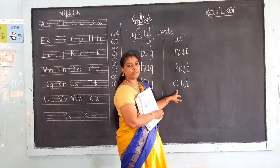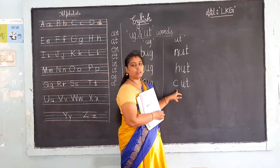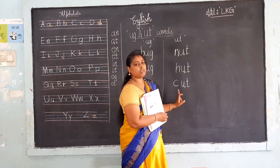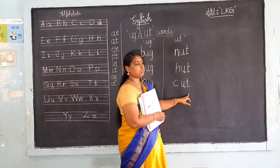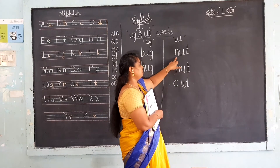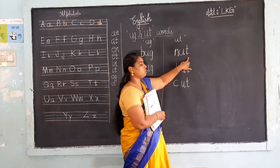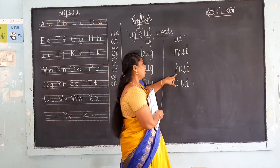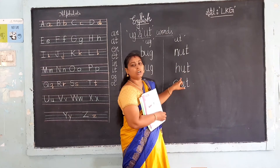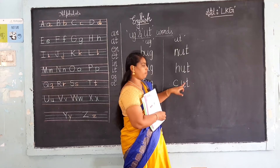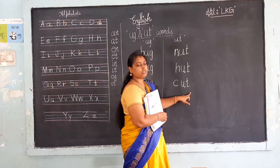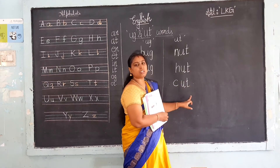What is the sound of C? K, U, T — cut. Say again: N, U, T — nut. H, U, T — hut. K, U, T — cut.